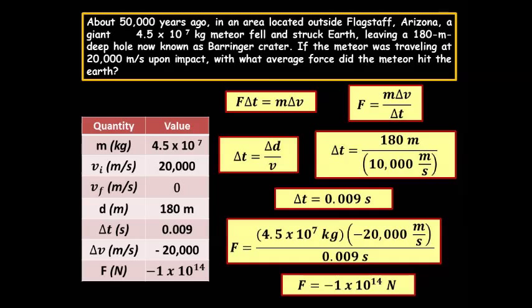20,000 is 10 to the 4th. 1 times 10 to the 4th is 10,000. 20,000 would be 2 times 10 to the 4th, or a magnitude of 4. 0.009 would be a magnitude of negative 3.